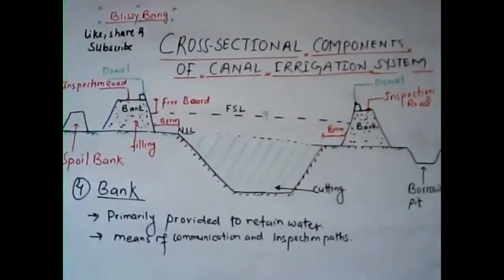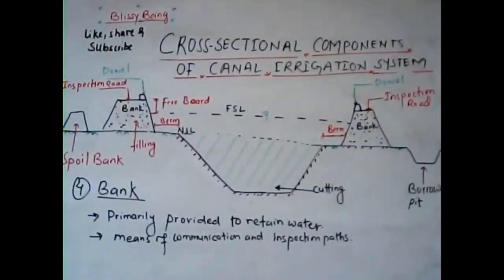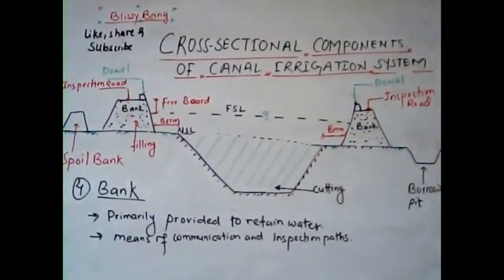The next cross-sectional element is the bank. The primary purpose of the bank is to retain water. Banks can also be used as a means of communication and as an inspection spot. They must be wide enough so that a minimum cover of 0.5 meters is available above the saturation line.